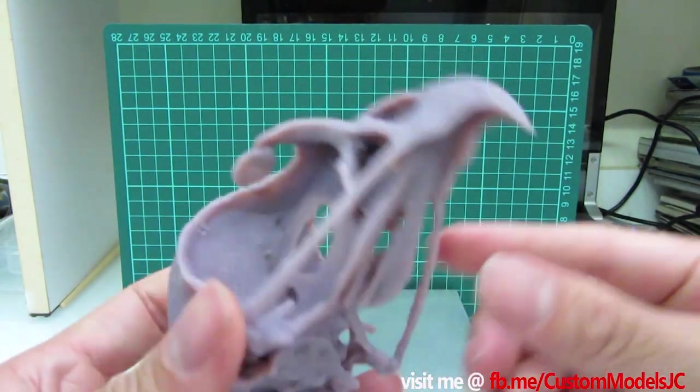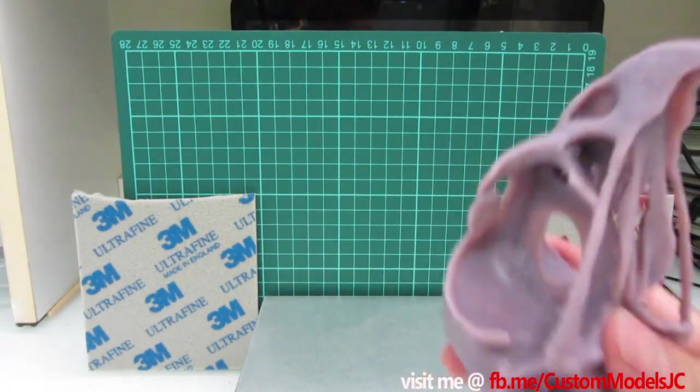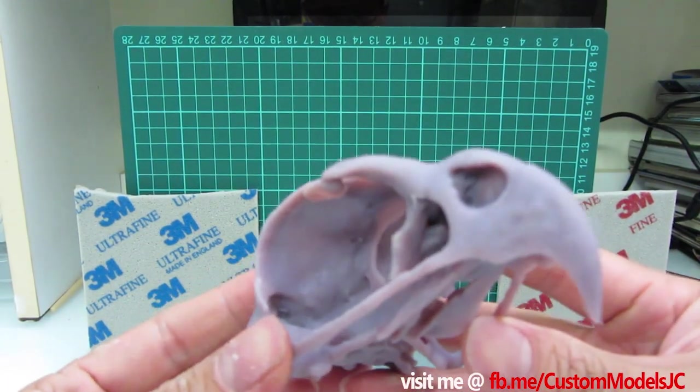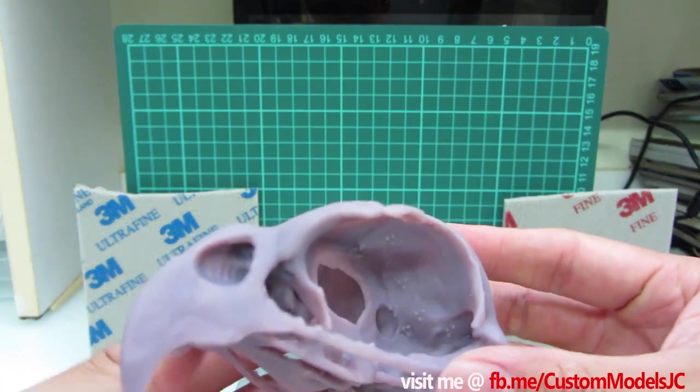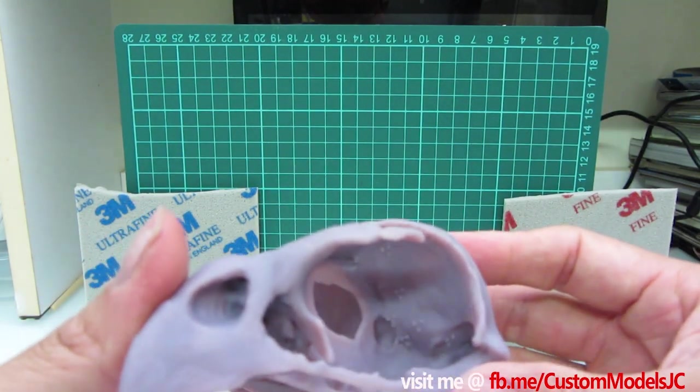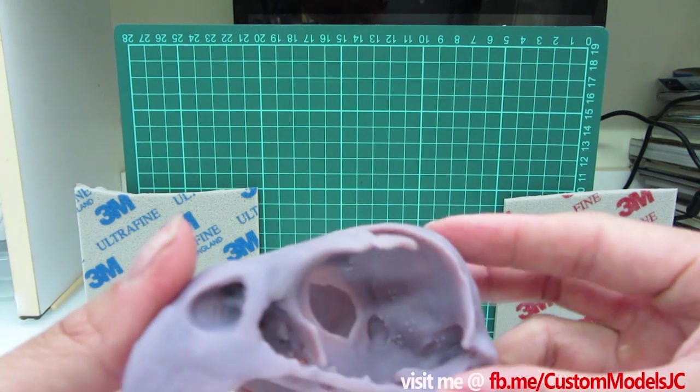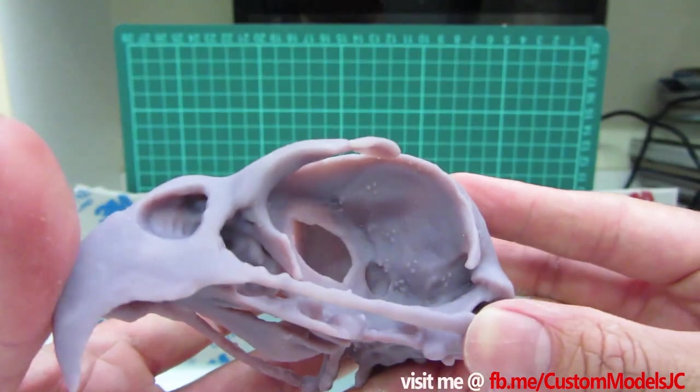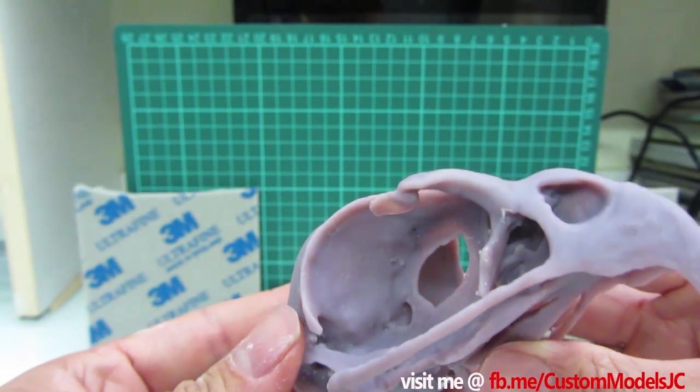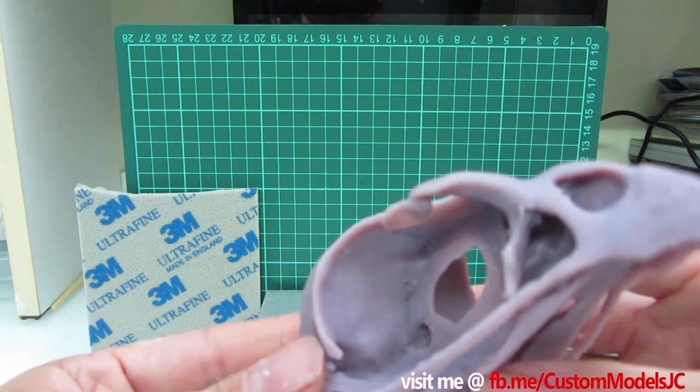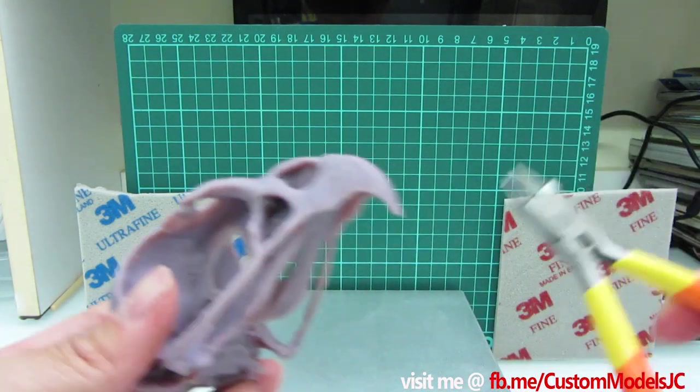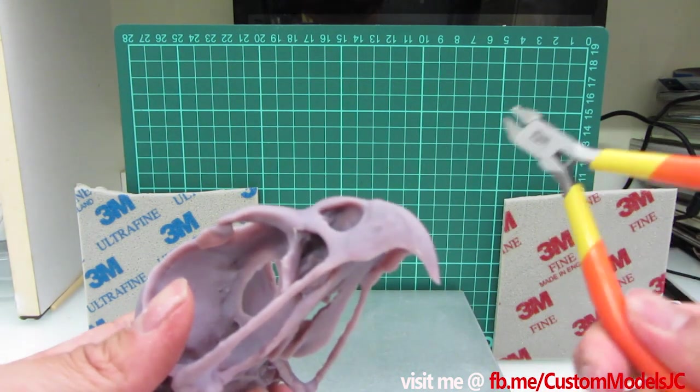Alright guys, so I just wanted to quickly show you a before and after sanding. So I just spent like two or three minutes removing these little support pots on this side, and yeah, I mean they're pretty easy to remove and sand down. So I use my clippers and exacto knife.